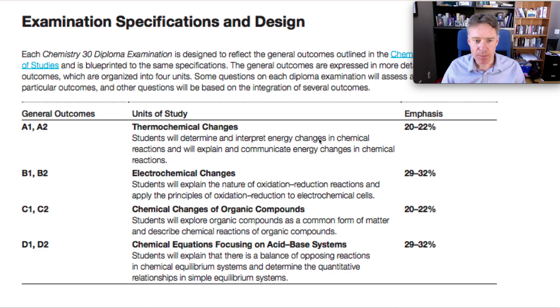In terms of the layout of the diploma, all the diplomas in 2022, 2023, and pretty much every year, it's this format. Thermal chem about 20%, electrochem about 30%, organic again about 20% and about 30% again for equilibrium. There's some range here for the different diplomas and some questions will overlap. But roughly, you're looking at 12 questions for the lower weighted units and about 18 questions for the higher weighted units.